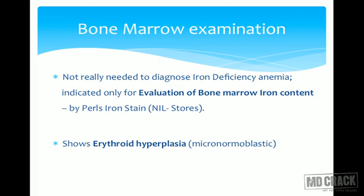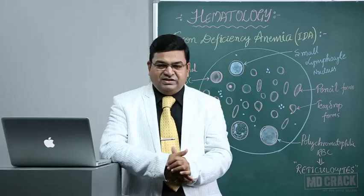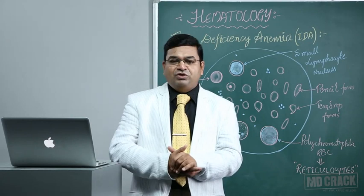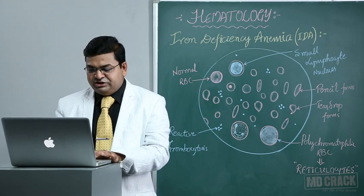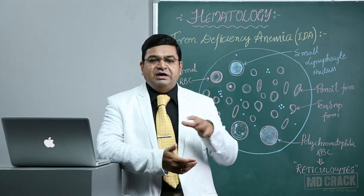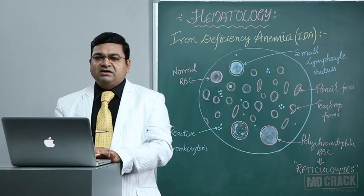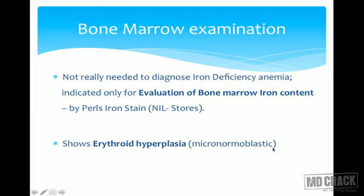In thalassemia patients, there will be hemochromatosis with excessive iron stores — the opposite of iron deficiency anemia. If thalassemia is suspected and bone marrow iron content is clinically relevant, bone marrow examination is indicated, especially if the patient shows features like frontal bossing and bone marrow expansion. In iron deficiency anemia, the bone marrow shows micro-normoblastic erythroid hyperplasia — normoblasts reduced in size — as a response to peripheral anemia.